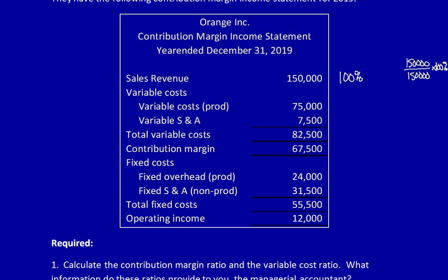I'm going to start with the Variable Cost Ratio. Again, I'm going to use Sales Revenue as the denominator. Total Variable Costs divided by Sales Revenue multiplied times 100% is equal to 55%. That's the Variable Cost Ratio.